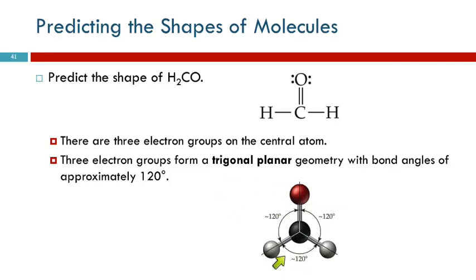Three groups are going to form a triangle at 120 degrees. This shape is called trigonal planar because it's a triangle and it's planar — it's in a plane, it's flat. All of those atoms lie in the same plane, the same two-dimensional space.